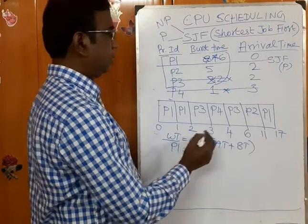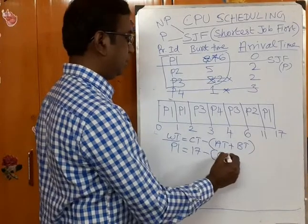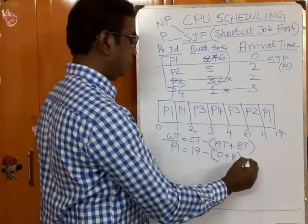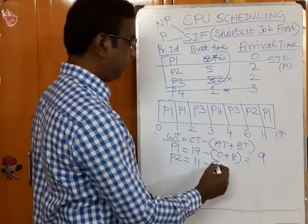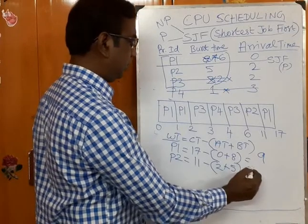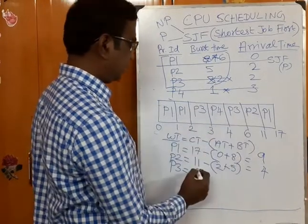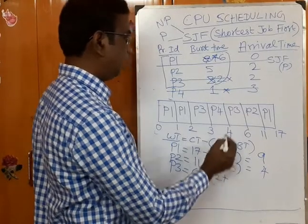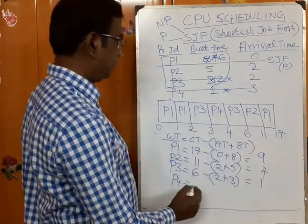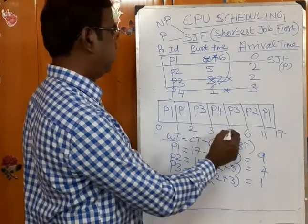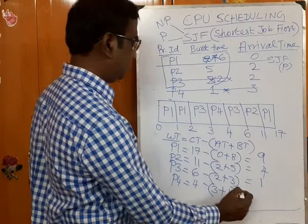For P1: last appearance (completion time) is 17, minus arrival time 0, minus burst time 8 — so 17 minus 8 equals 9. For P2: completion time 11, minus arrival time 2, minus burst time 5. For P3: completion time 6, minus arrival time 2, minus burst time 3 — so 2 plus 3 equals 5, and 6 minus 5 equals 1. For P4: completion time 4, minus arrival time 3, minus CPU burst time 2.